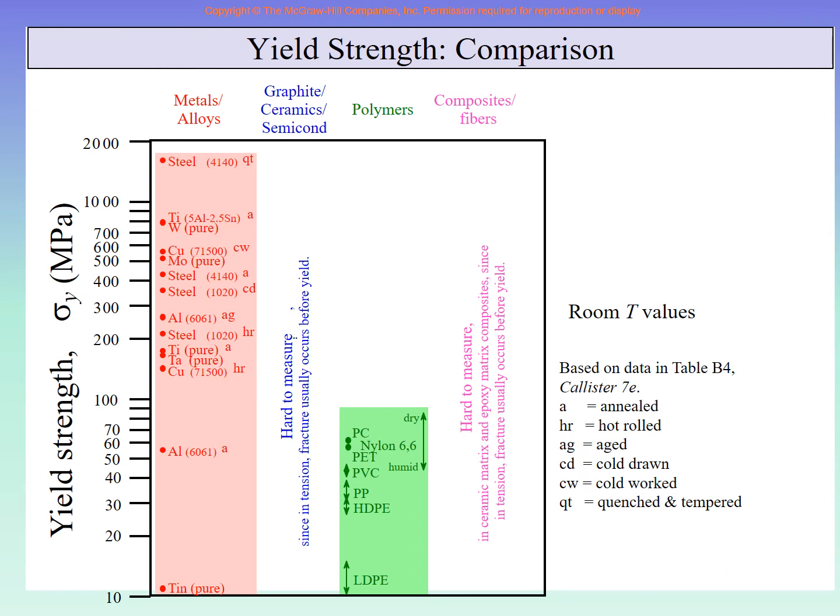So yield strength again, as I showed you the previous chart, this chart is also from Callister. Callister is a very good book in this regard. So we have yield strength here. The unit is mega Pascal, metals and alloys, ceramics, polymers, composites. This is the yield strength. Once again, if I ask you now, you have gone through the previous lecture, what is the yield strength? If you have to say one sentence, what will you say? What is the yield strength?